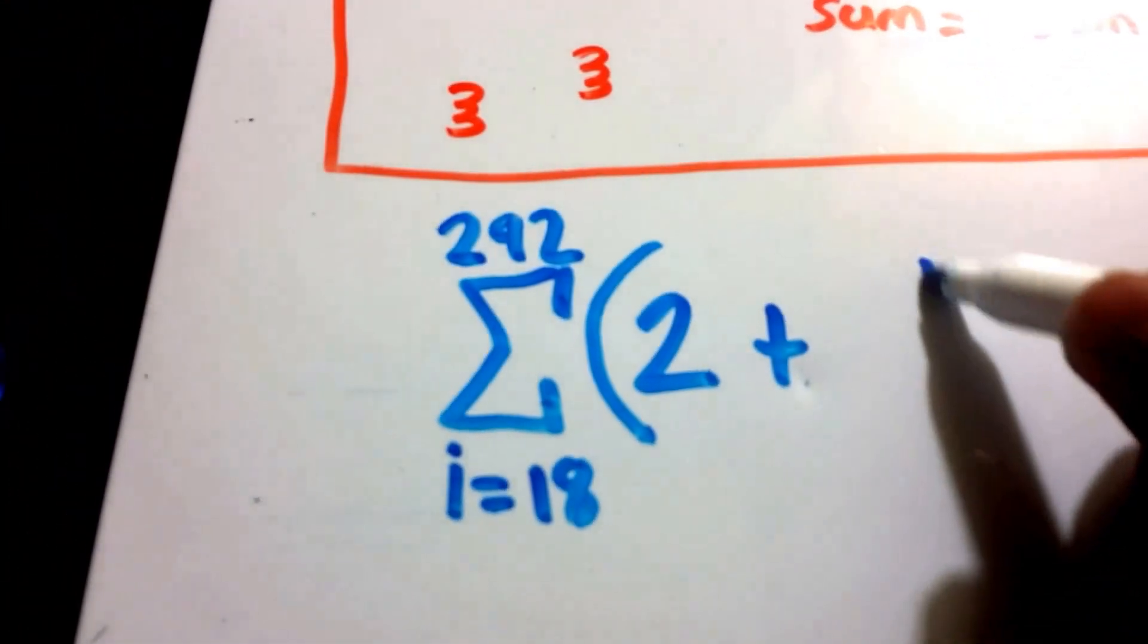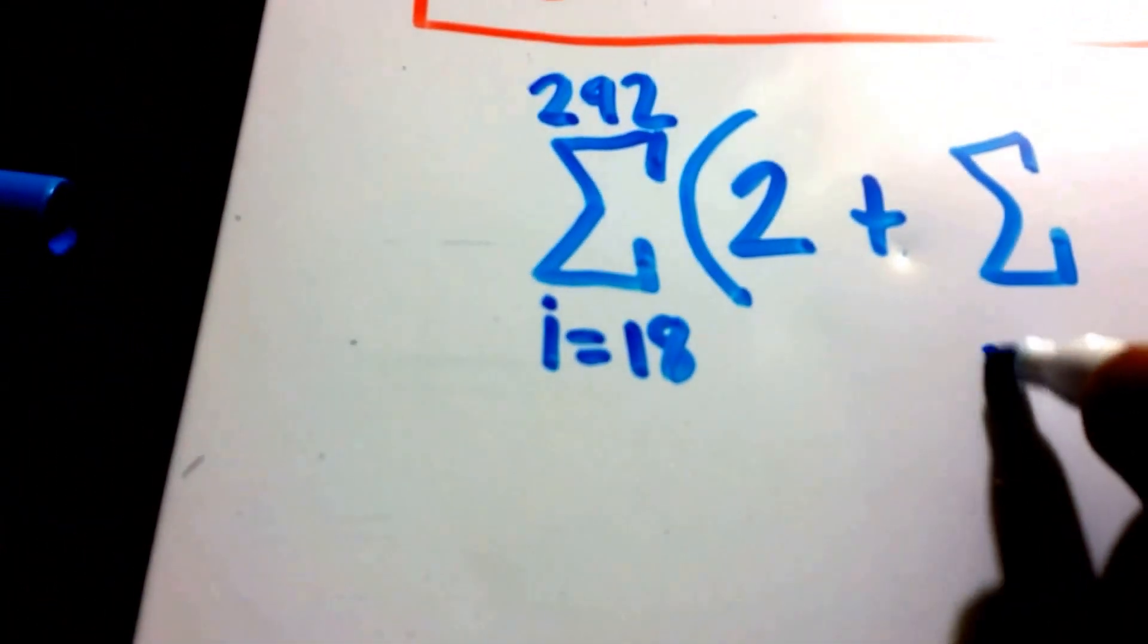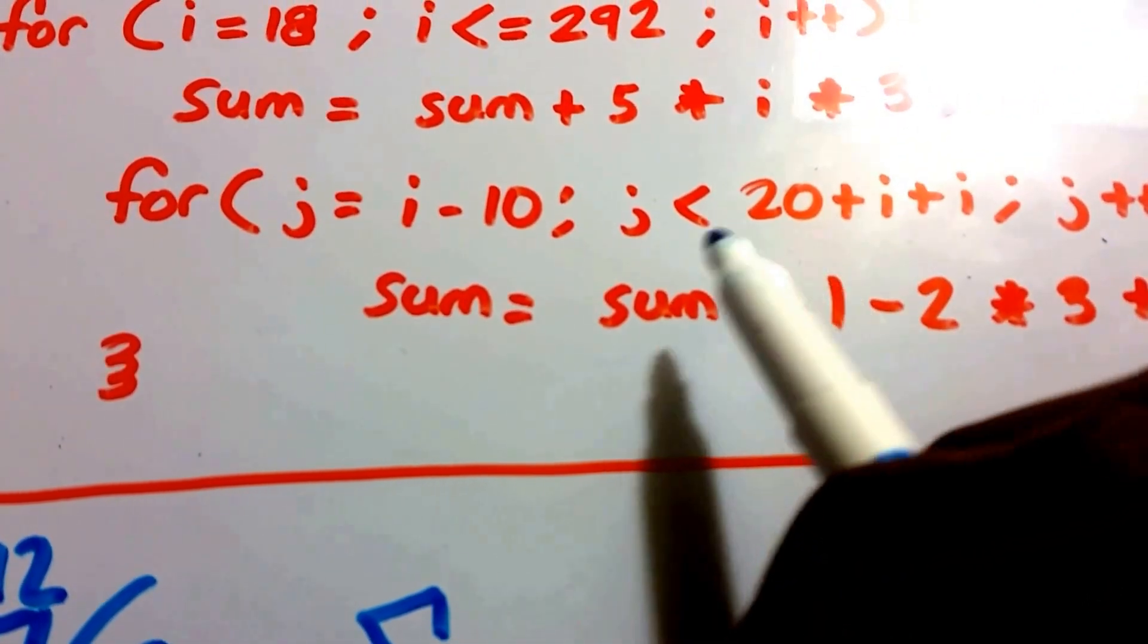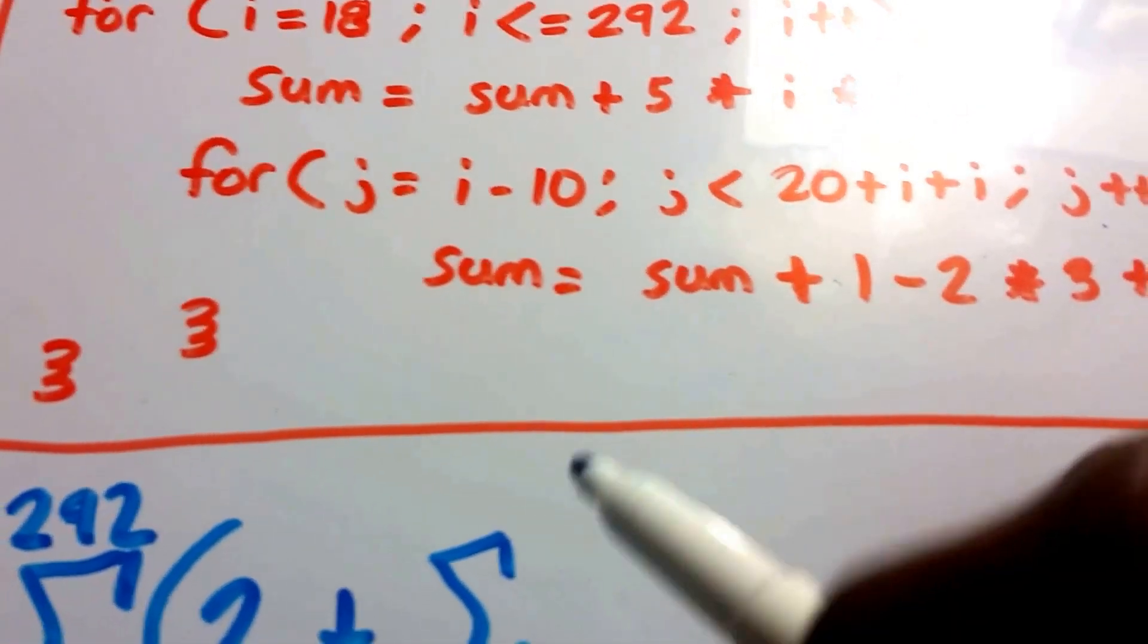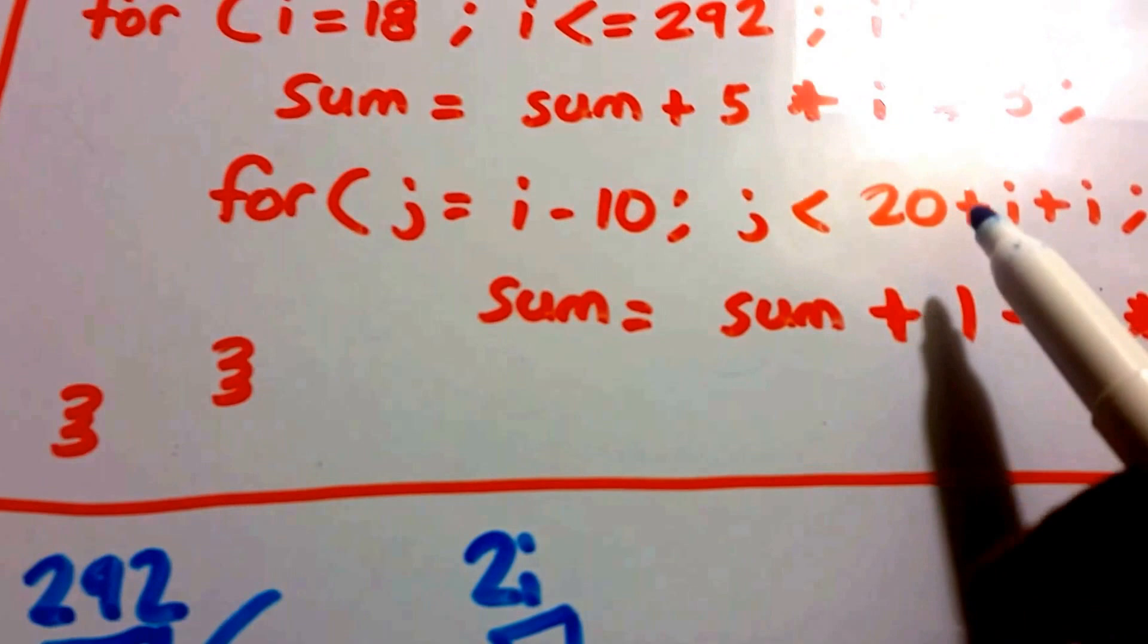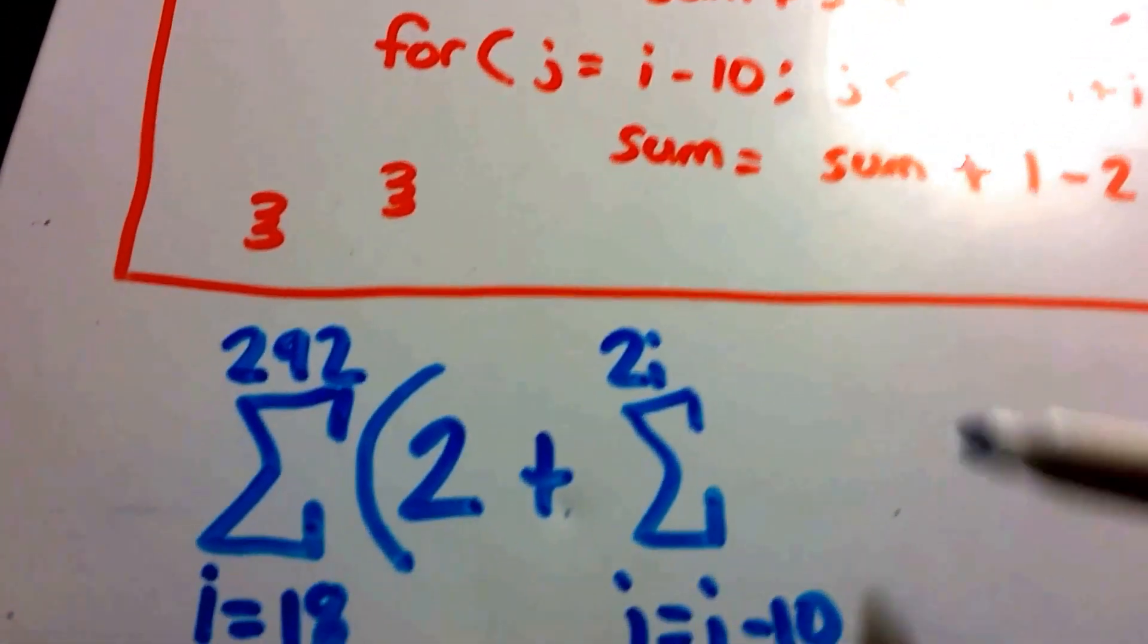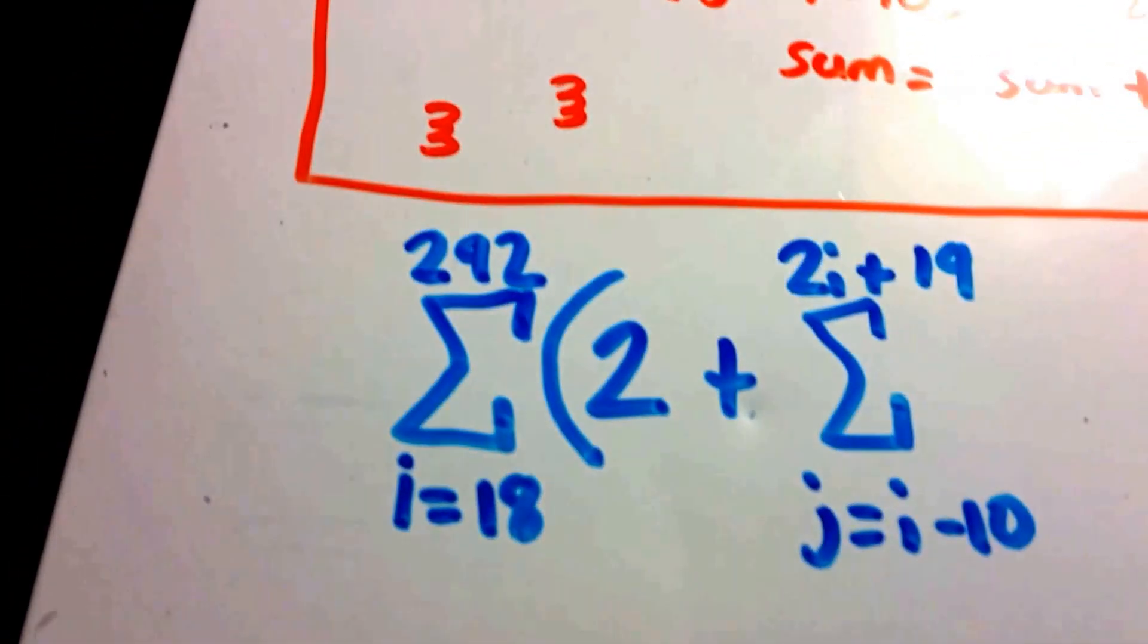Plus the summation from j equals i minus 10, all the way up until 20 plus i plus i, well actually one less than that because it's not equal. So that's 2i, right, because we have i plus i, so that's 2 times i. And since it never reaches that 20, or that last iteration, we have to subtract 1 from that. So we get, instead of plus 20, we're going to get plus 19 here, okay?